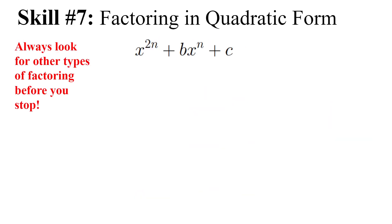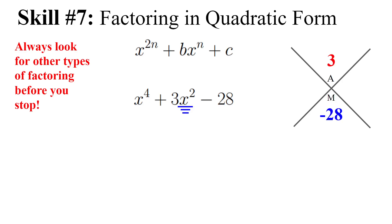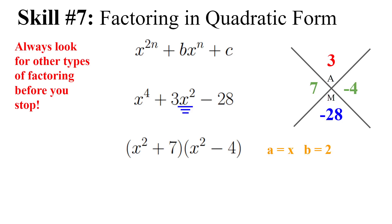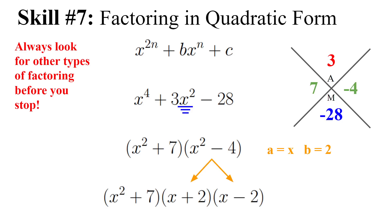Always look for other factoring types before you stop. For x⁴ + 3x² − 28: the exponents are doubled, so it's quadratic form. Underline x². Numbers that add to 3 and multiply to −28 are 7 and −4. This gives (x² + 7)(x² − 4). But x² − 4 has a minus sign with two perfect squares — that's DOTS. So break it into (x + 2)(x − 2). Full factored form: (x² + 7)(x + 2)(x − 2).